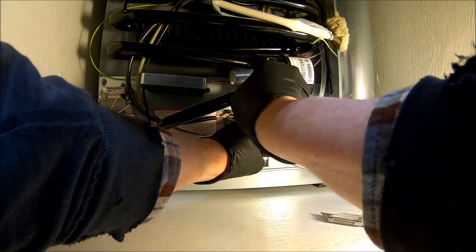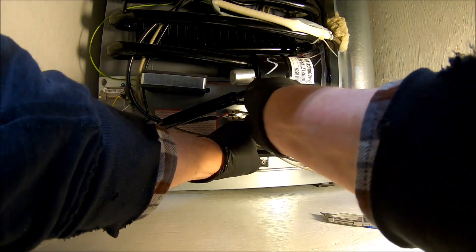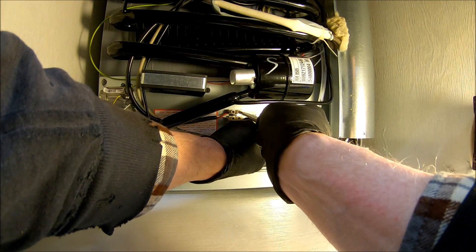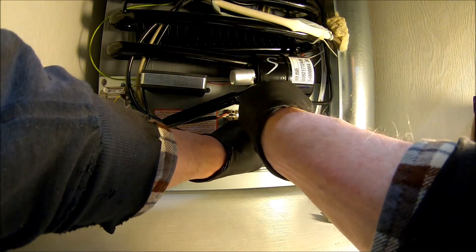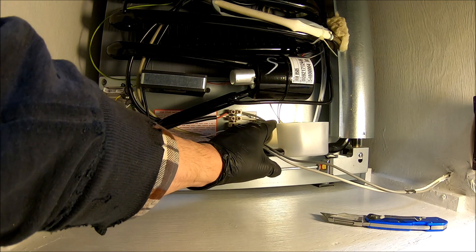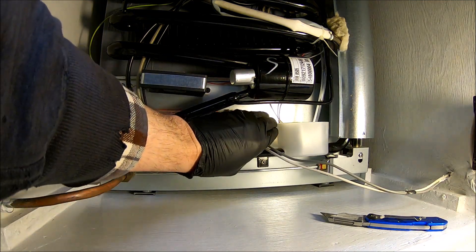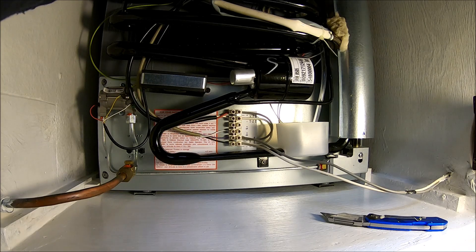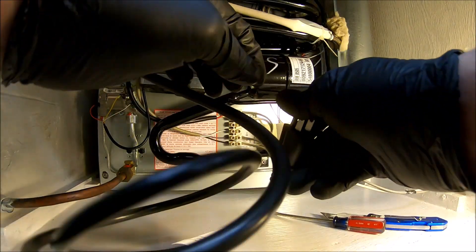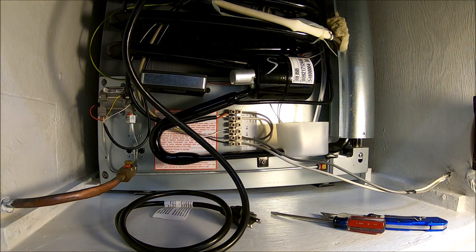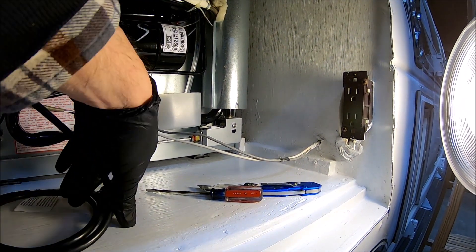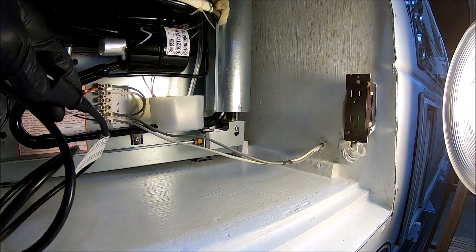This is a Dometic three-way refrigerator. The model is 8505. Runs on propane, 12 volts is what I'm hooking up. And that's done, and then it has a cord here that you can plug in over here for the 110 AC.